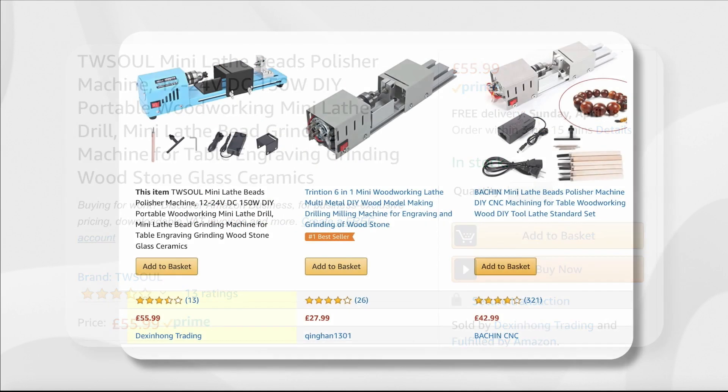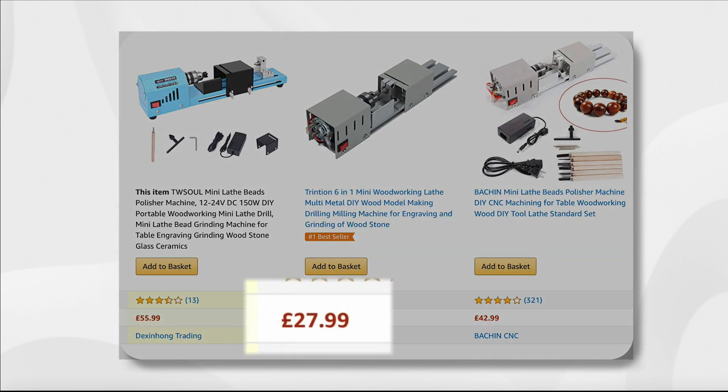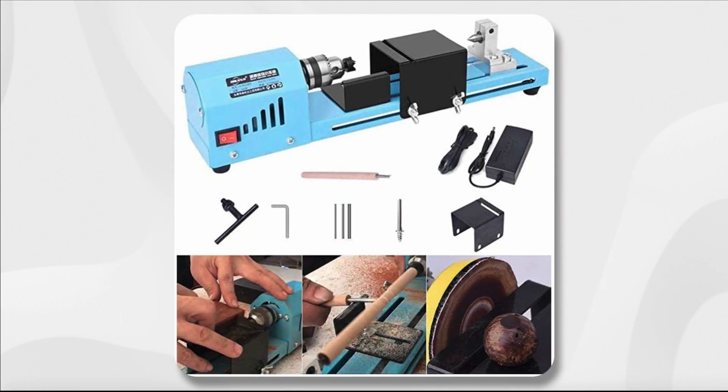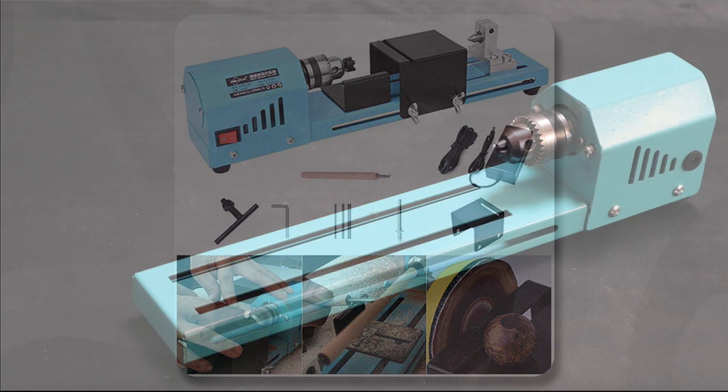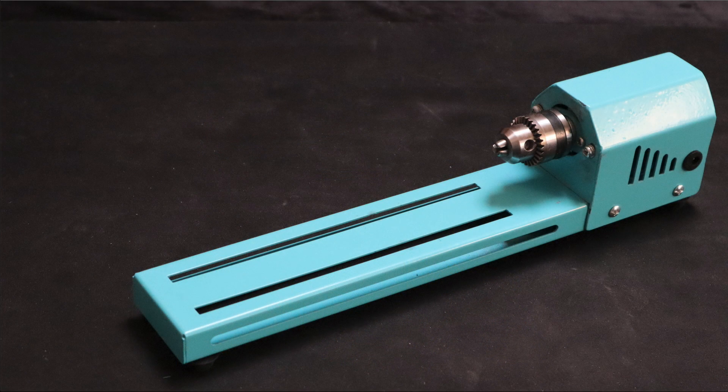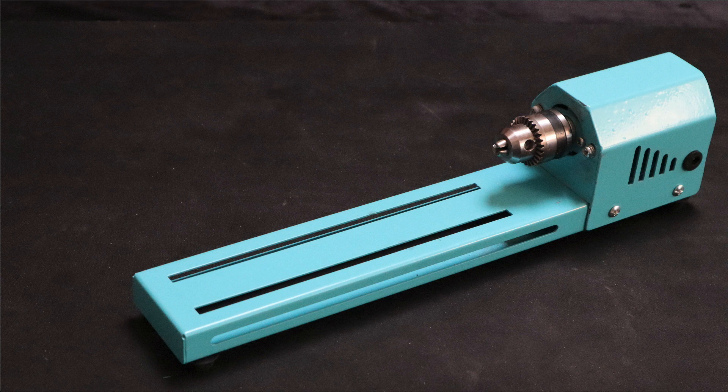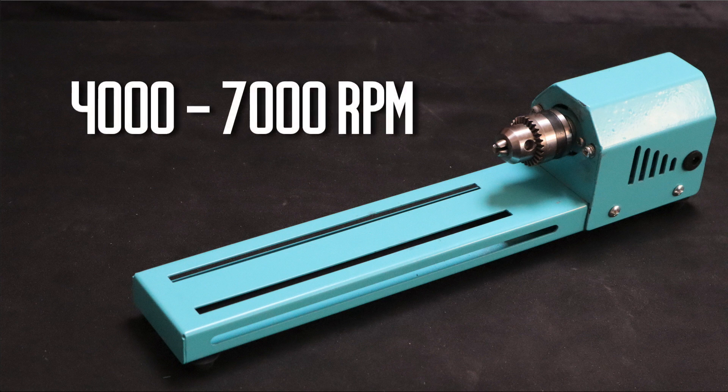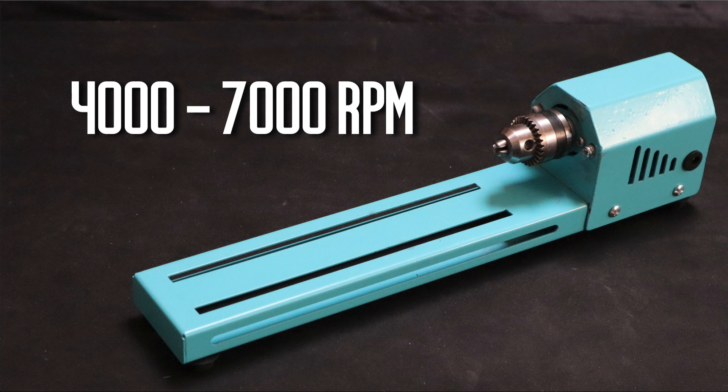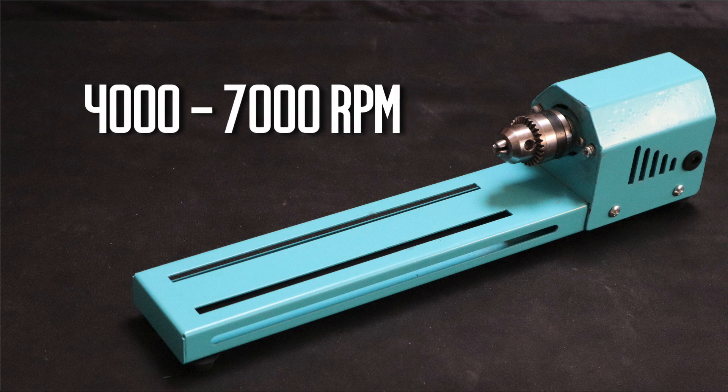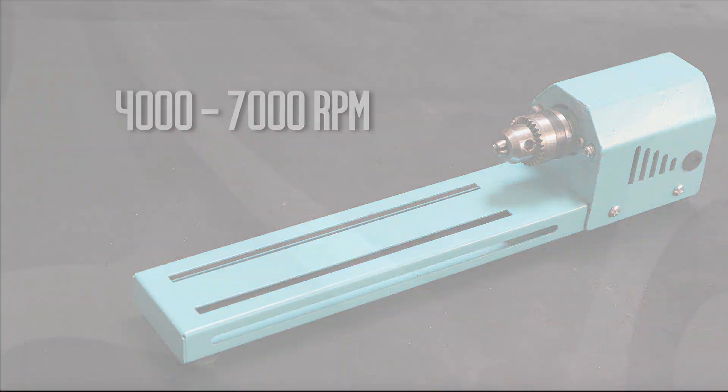Now there are cheaper mini lathes on the market, but I decided to go with something that was mid-range because I wanted the more robust stainless steel dust cover, whereas the cheaper versions tend to come with PVC plastic. I also noticed that this model offers variable speeds in this case from 4,000 up to 7,000 RPM, which was almost 50% better than some of the lower end lathes, and so I suspect the motor is a little better made on this one.